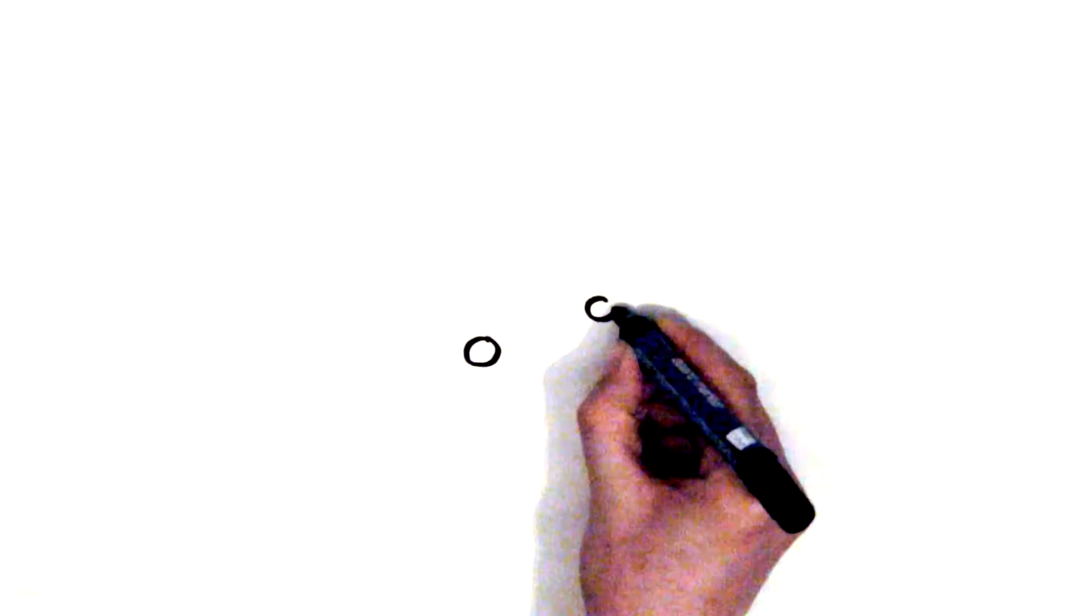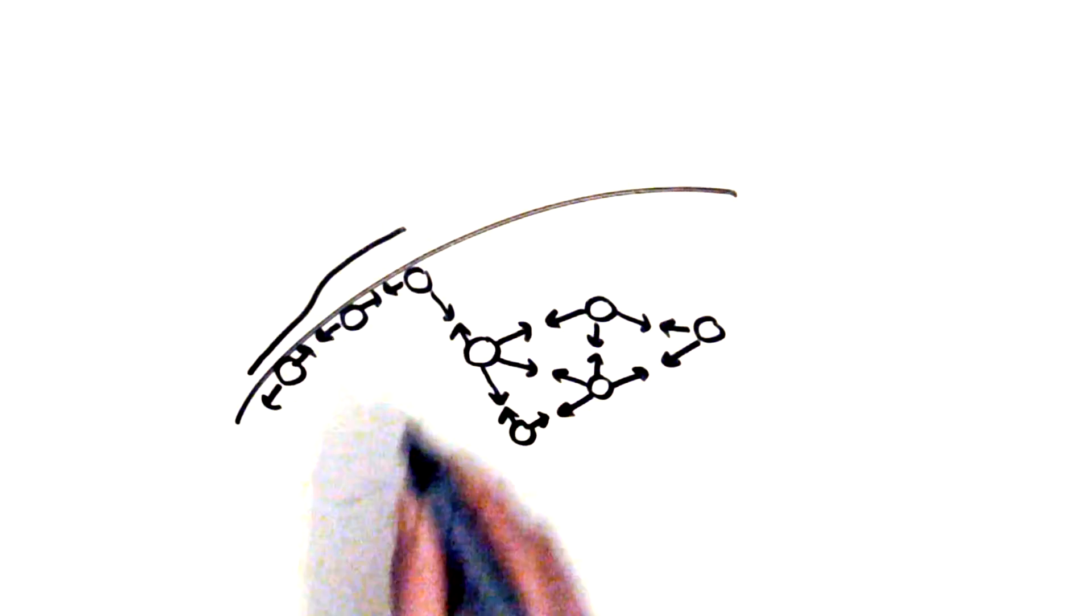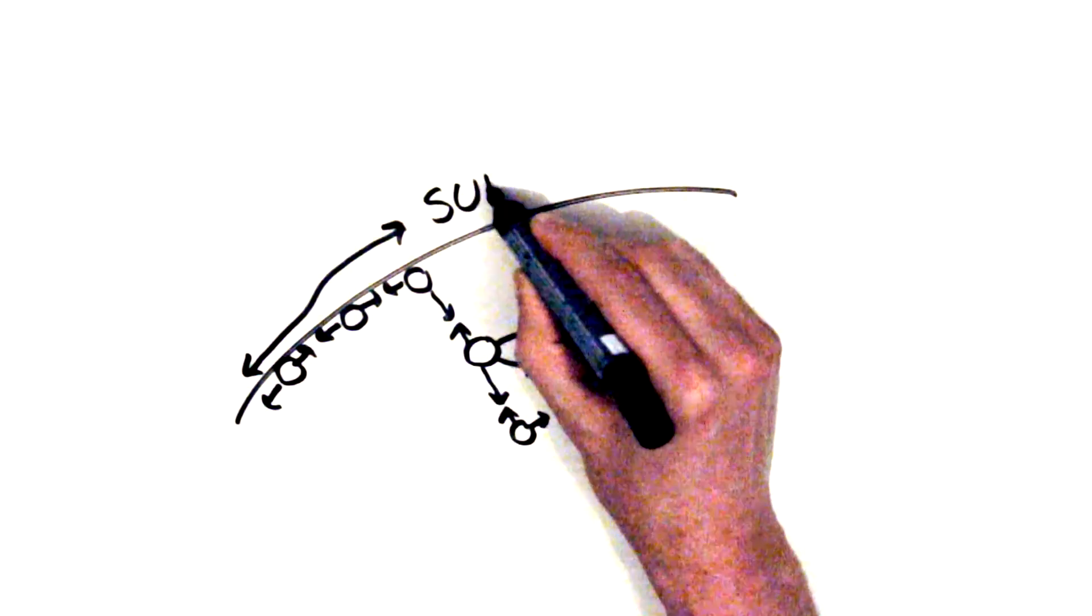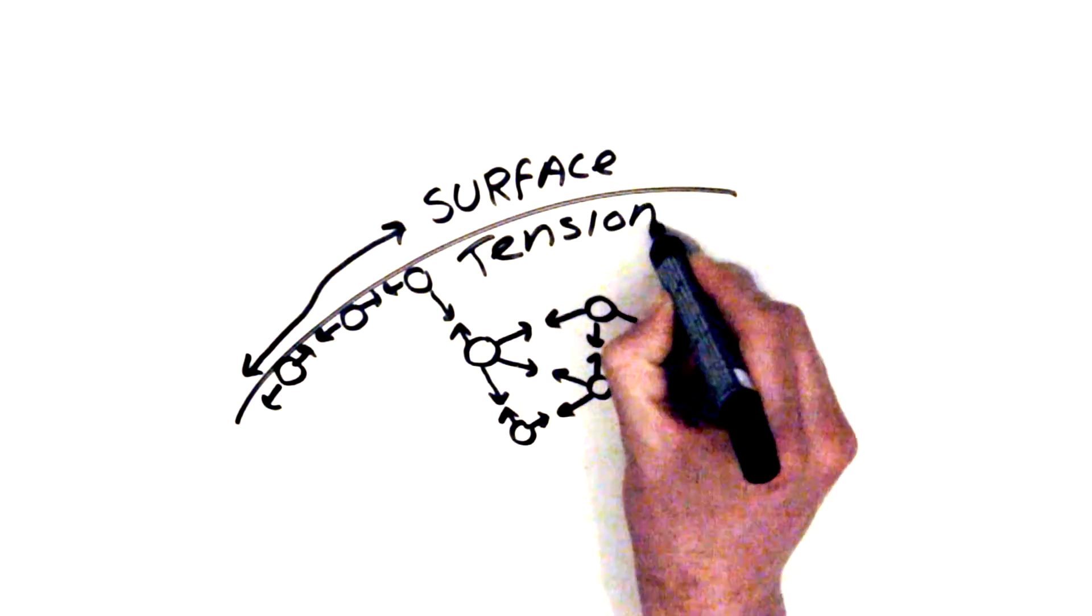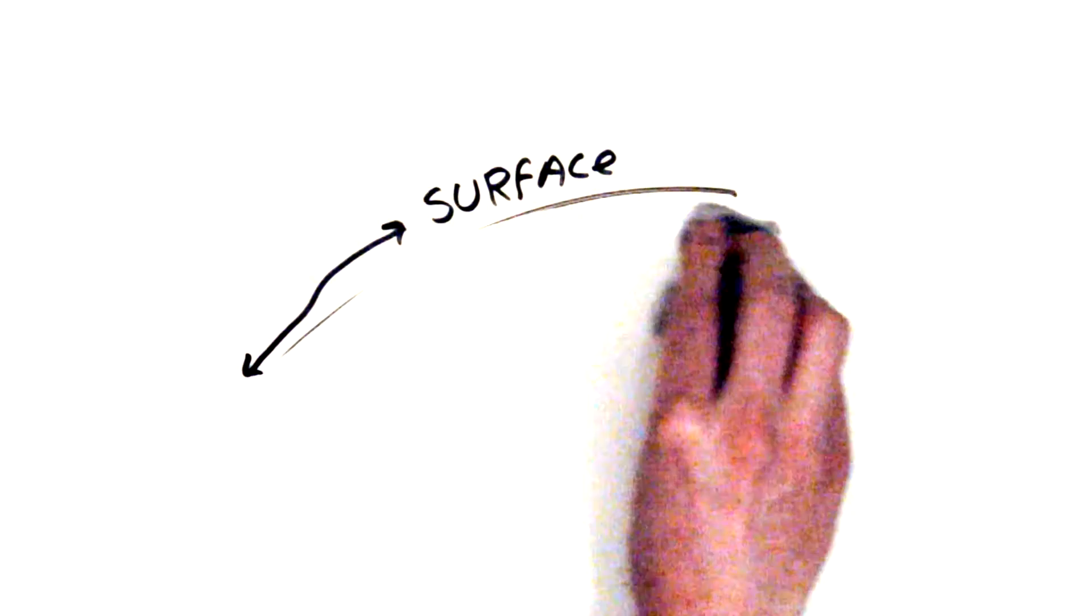Water molecules have a cohesive force, they want to stick together. But the molecules on the surface don't have any water molecules to attach to, just air. This causes what is known as surface tension. It is almost like there is a thin elastic layer on top of the water.